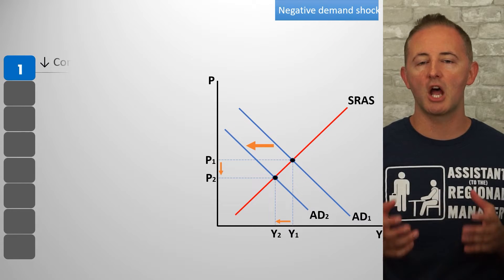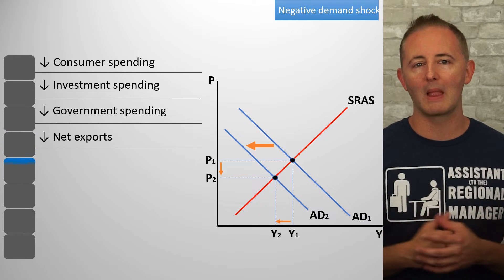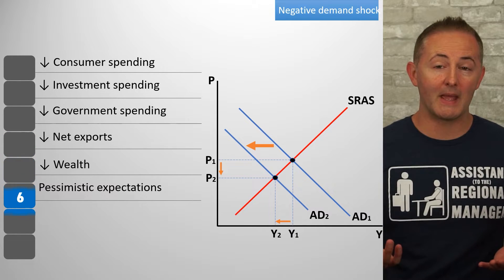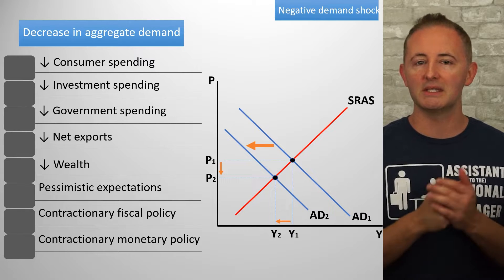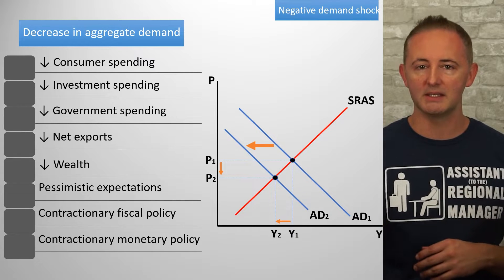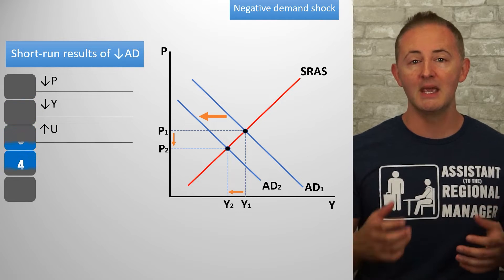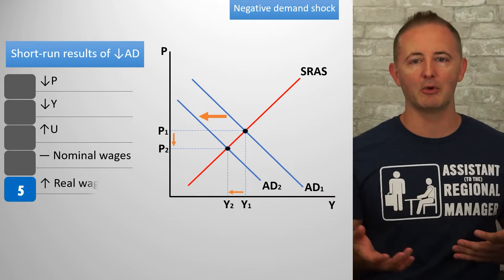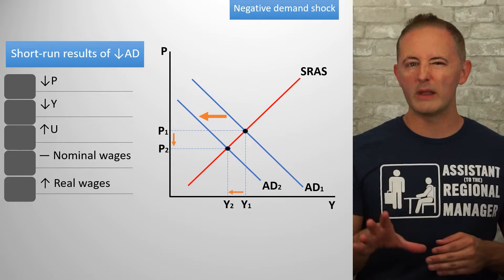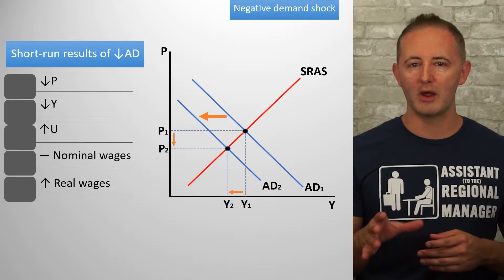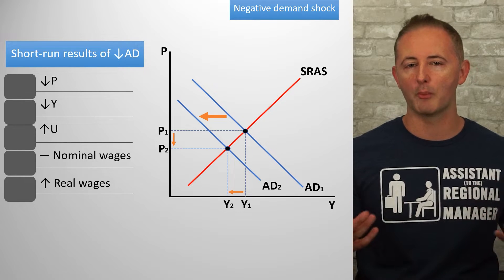A negative demand shock shifts the AD curve left, leading to a lower price level and lower level of output. This is caused by a decrease in C, I, G, or XN, and because of the decrease in output, unemployment rises. Nominal wages are unchanged in the short run, and real wages rise this time because the same nominal wage is being divided by a lower price level. So we're in a weird spot here where fewer people have jobs, but those who still have jobs have more purchasing power.